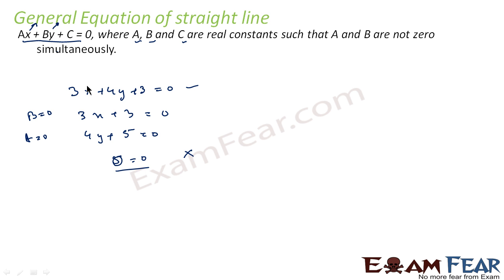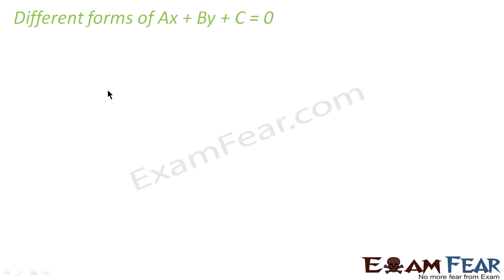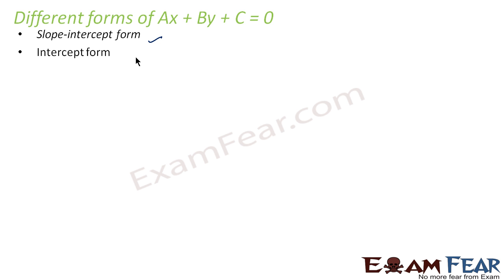There are different forms of ax + by + c = 0. They are: slope-intercept form, intercept form, and normal form. These are the three forms of ax + by + c = 0.